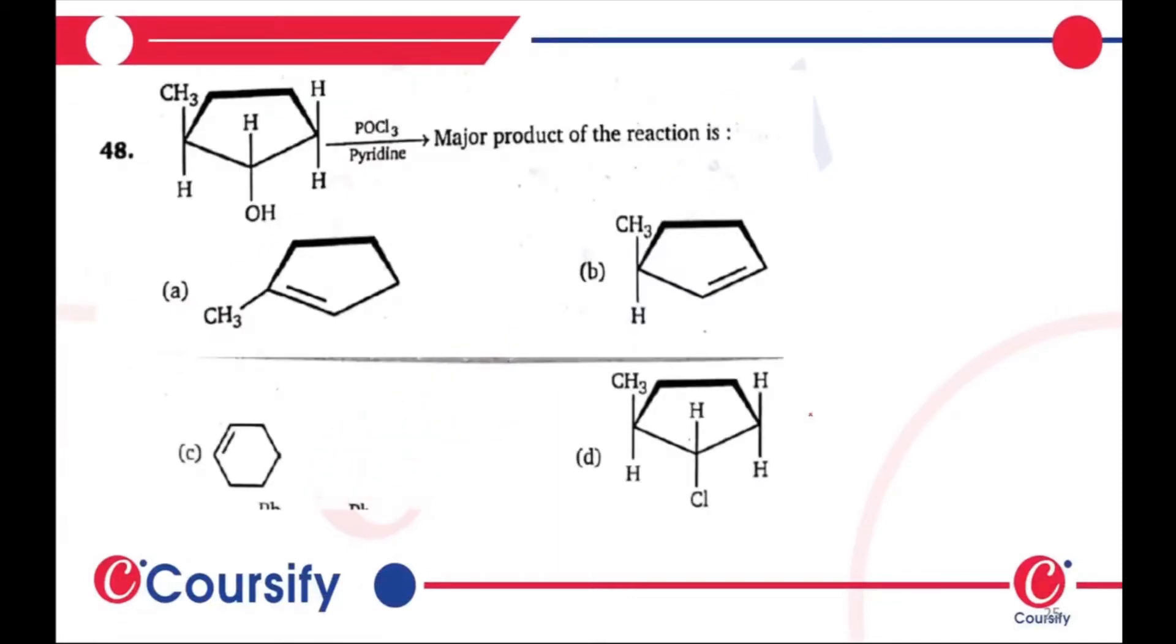We are having this question. You have a structure - we have a pentacyclic 5-membered ring with substitution CH3, OH, and H. With POCl3 in the presence of pyridine, we will get the major product of the reaction. So the options are: